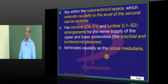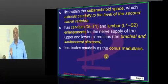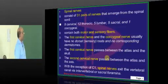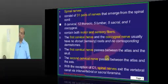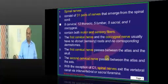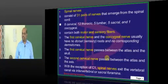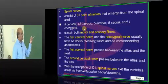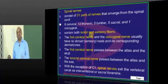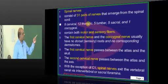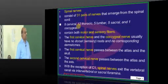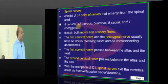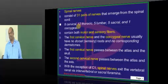Ultimately the spinal cord tapers down and forms what is called the conus medullaris. There are totally 31 pairs of nerves exiting the spinal cord: 8 cervical, 12 thoracic, 5 lumbar, 5 sacral, and 1 coccygeal nerve. This number is very important because the examiner's favourite question is how many spinal nerves are in the thoracic, lumbar, sacral, and coccygeal areas — you need to be 100% sure.